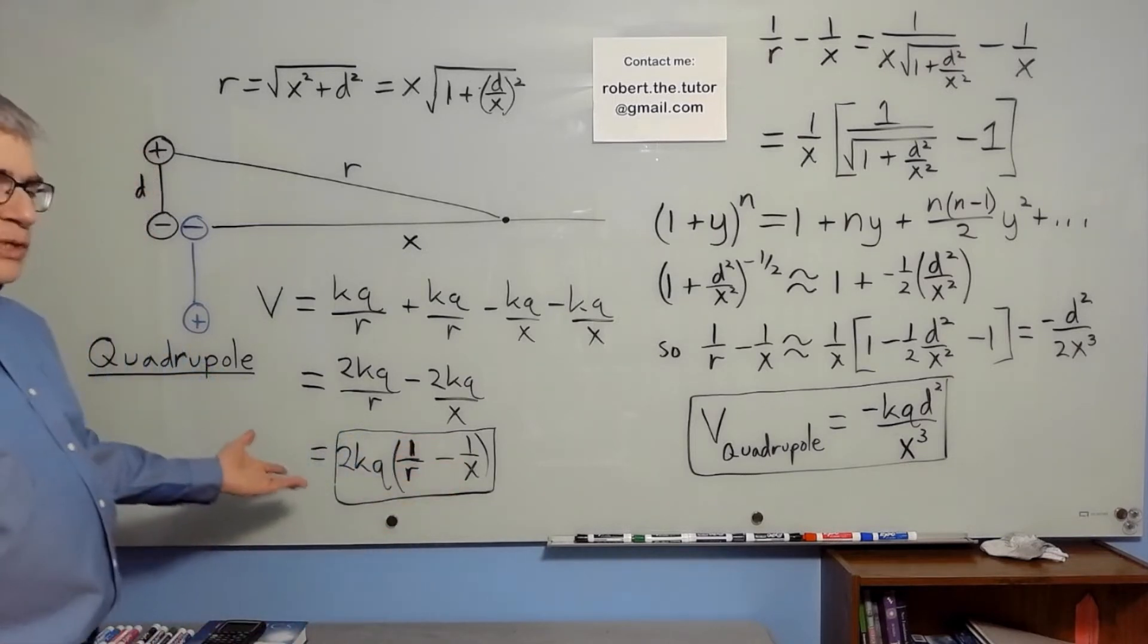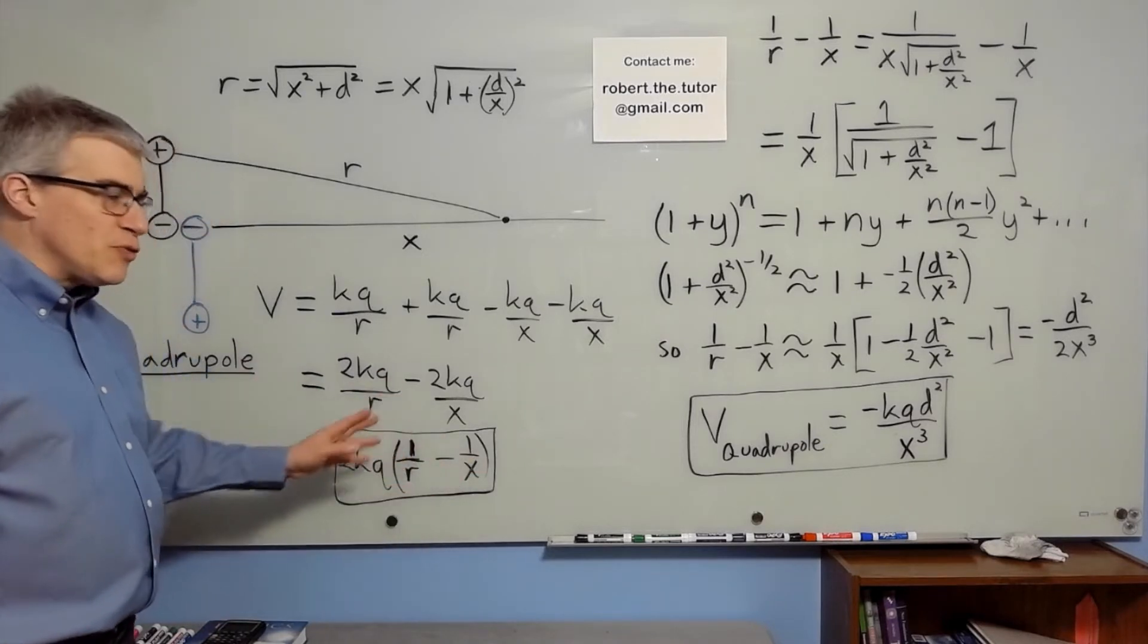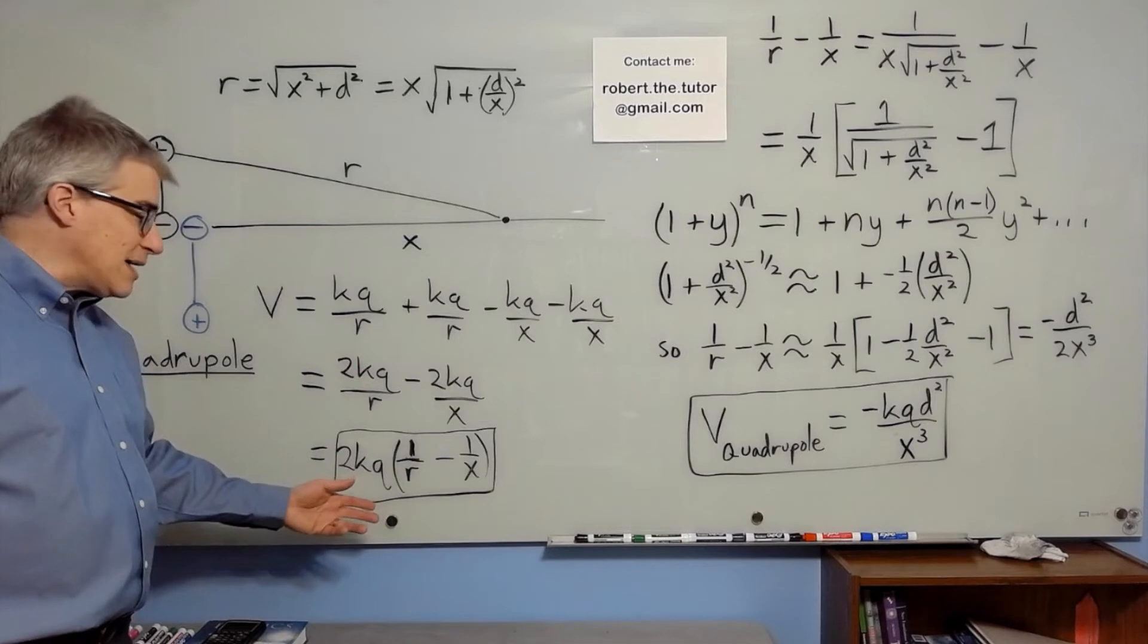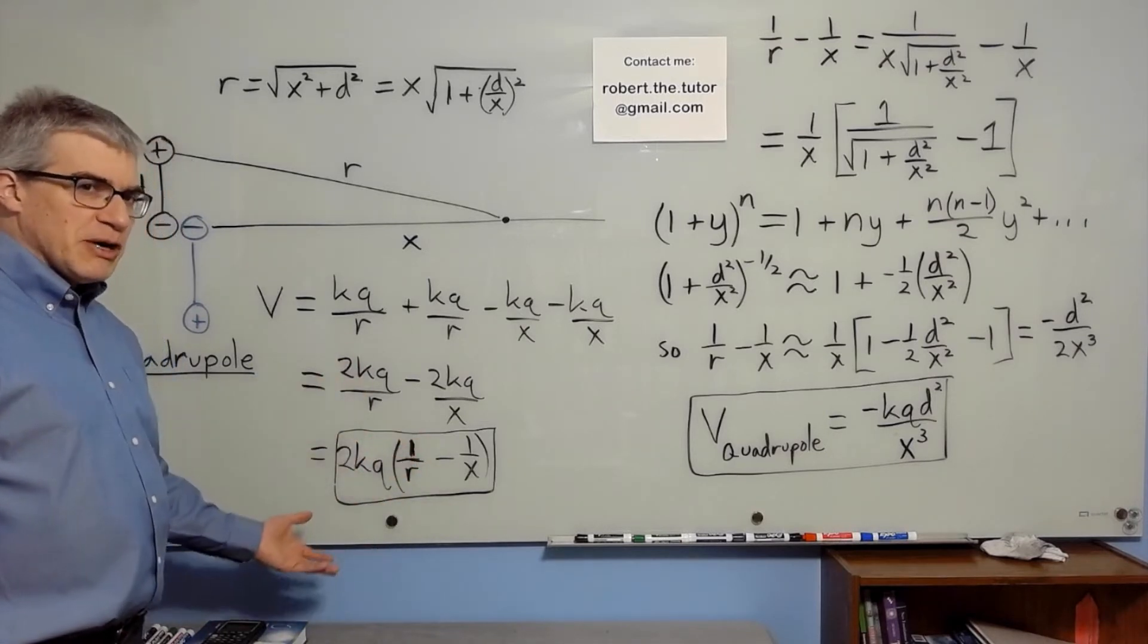All right, that's almost done. The sticky part is figuring out how this acts, because 1 over r is really close to 1 over x, which means this is really close to zero. But we don't want an answer of zero. We want a better approximation.